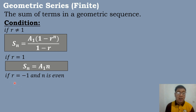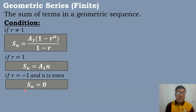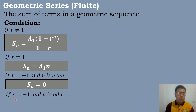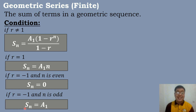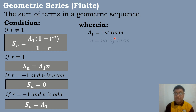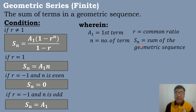If R is equal to negative 1 and n is an even number, then we use the formula S sub n equals 0. And the last condition: if R is equal to negative 1 and n is an odd number, S sub n equals the value of the first term. Here, A sub 1 is the first term, n is the number of terms, R is the common ratio, and S sub n is the sum of the geometric sequence.